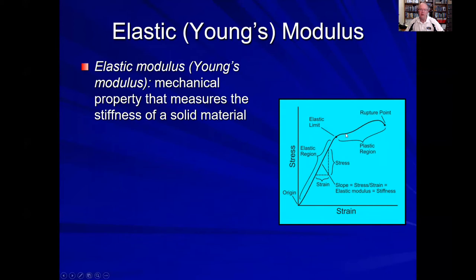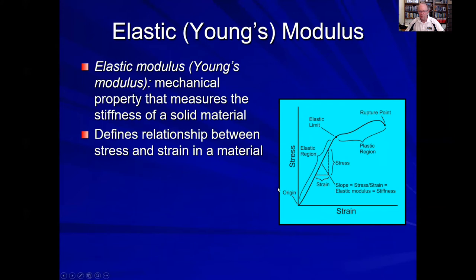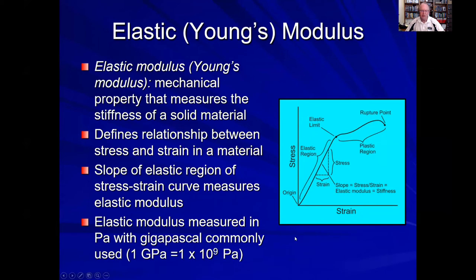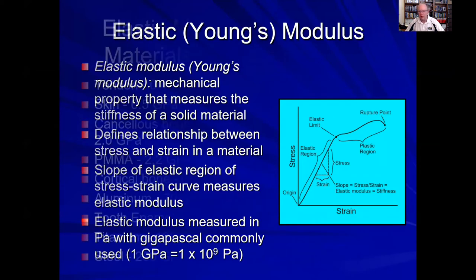One of the terms you'll encounter in biomechanics and engineering literature regarding tissues is elastic modulus, or Young's modulus. Elastic modulus is the mechanical property that measures the actual stiffness of a solid material. When we look at the stress-strain curve, stress divided by strain gives us the elastic modulus of the material. A high slope means a higher elastic modulus and greater stiffness; a low slope means a lower elastic modulus and more compliant behavior. Elastic modulus is typically measured in pascals, with gigapascals commonly used.